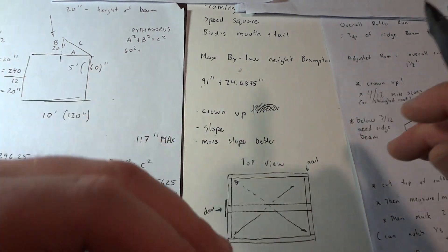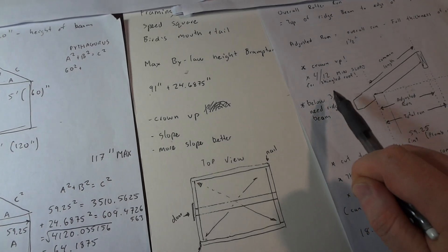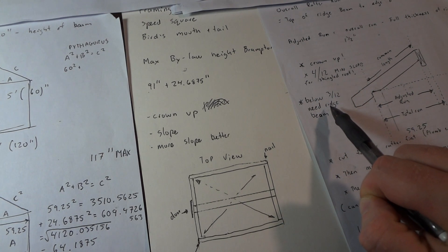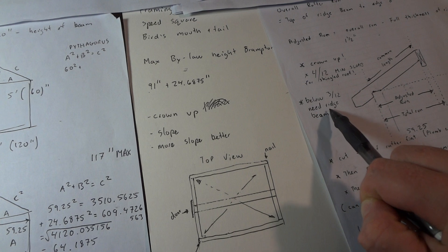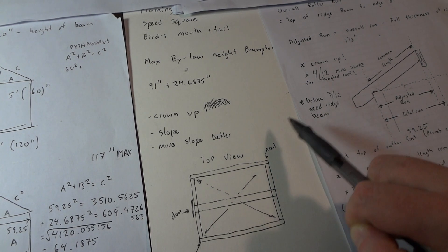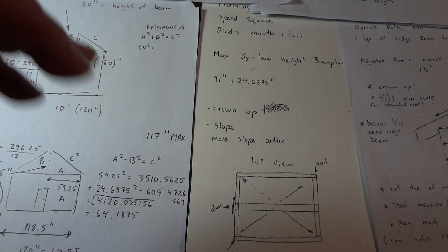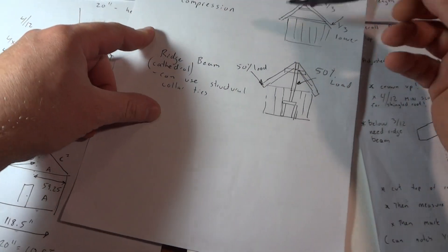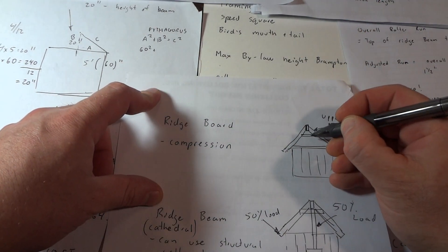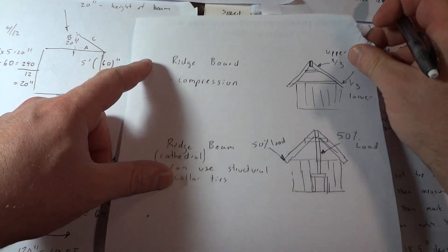Right now I'm just going to show you how to get started if you're confused about the math. First of all, the slope of your roof — 4/12 is the minimum slope for a shingled roof. If it's 3/12 then you actually need a ridge beam, so I would recommend a ridge beam anytime anyways. It's going to make it much stronger than a ridge board. A ridge board is when there's no support under the ridge board, just compression from the rafters, so I wouldn't recommend that.